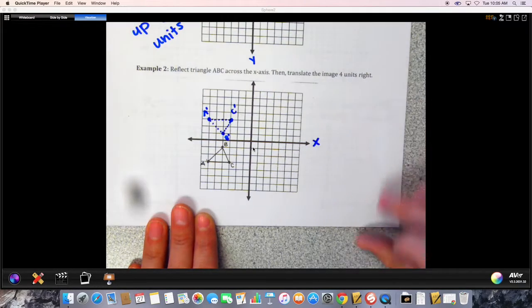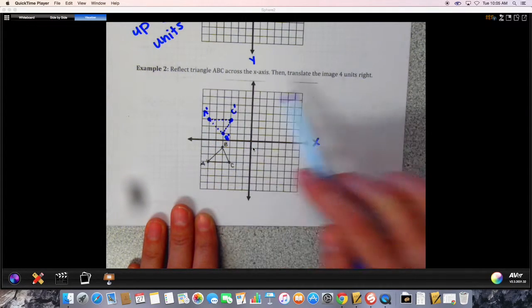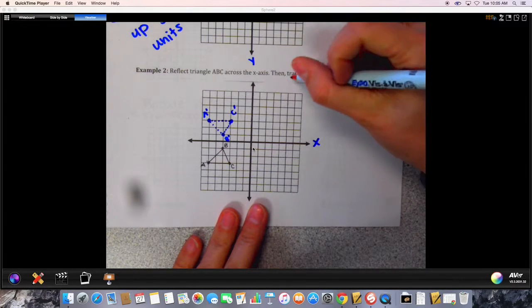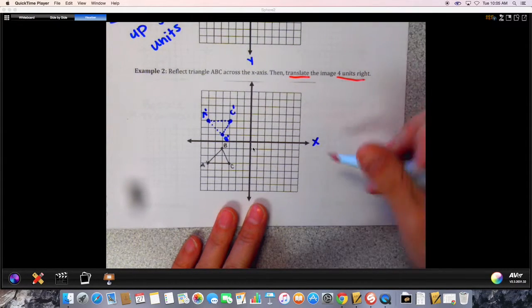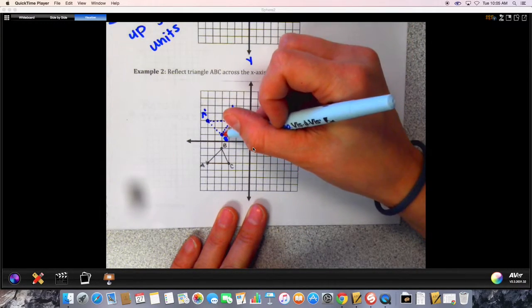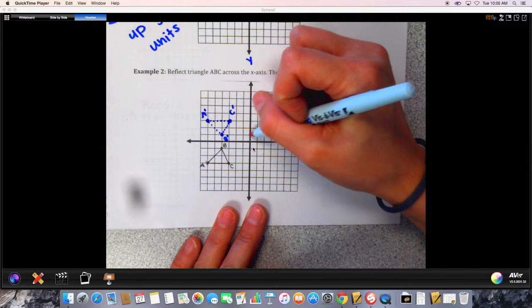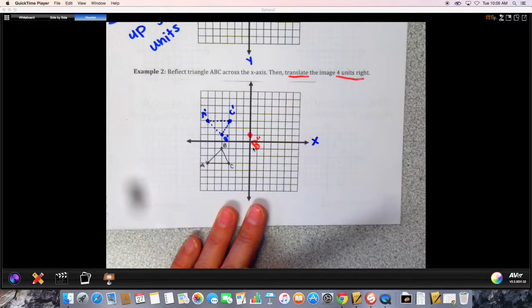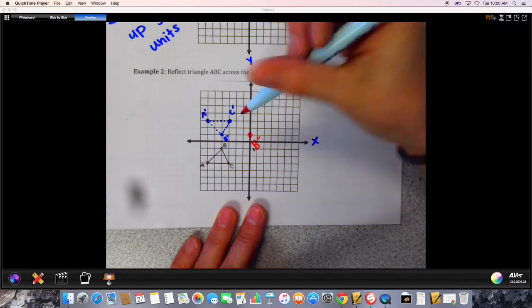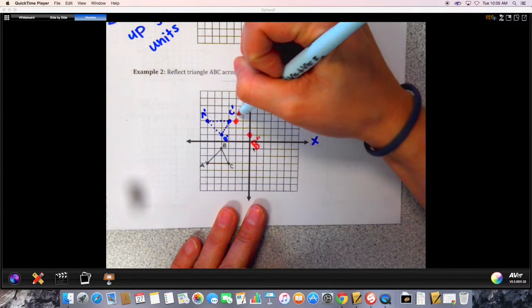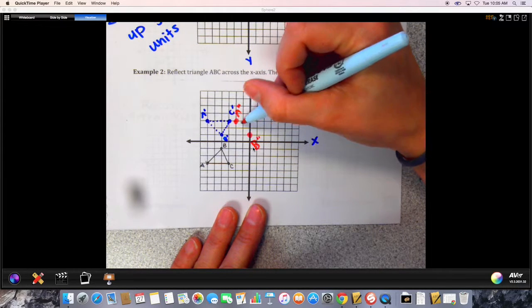That's the first part of it - that's your reflection. But now what do we have to do? Yeah, now it says we have to translate four units right. So we're going to take all of these and we're going to move them four spots. So I'm going to start with my B, one two three four. My B - and I'm going to put two lines there because that means I moved it twice. And my A, one two three four - here's A double prime. And C, one two three four.